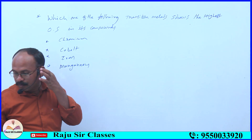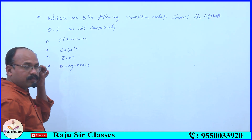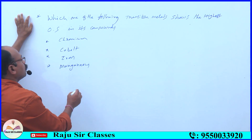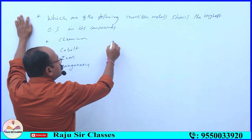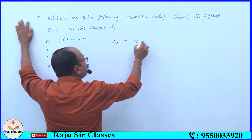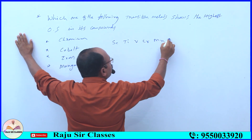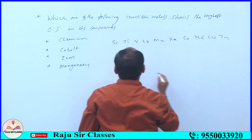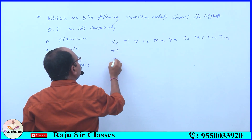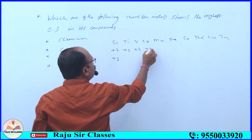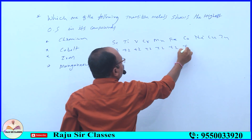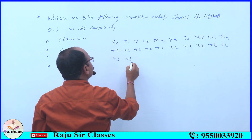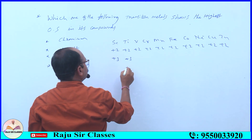Highest oxidation states across the 3D series: scandium, titanium, vanadium, chromium, manganese, iron, cobalt, nickel, copper, zinc. Plus two is common to all 3D series elements. Plus three also.